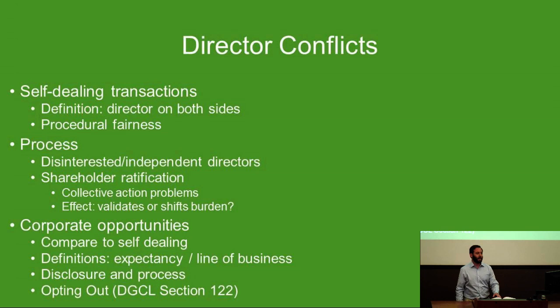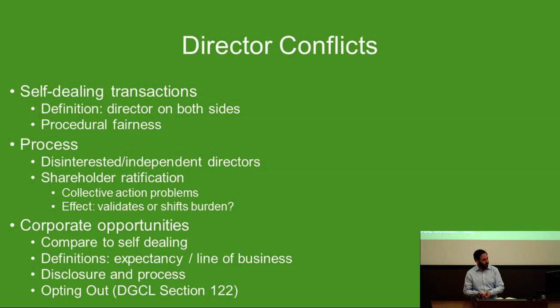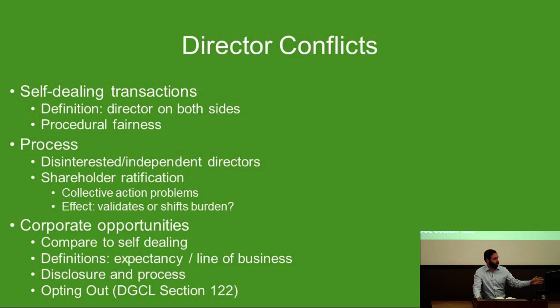Next, we have director conflicts — the duty of loyalty. This is where we really get to see some action where shareholders begin to win. We're going to talk about self-dealing transactions — directors on both sides: on the board of a particular company doing a transaction with another company that they are a shareholder in or director in. There's a process for once we've identified what these DCITs (Director Conflict of Interest Transactions) look like, we can cleanse them — one of the major roles of corporate attorneys is identifying these transactions and cleansing them so they don't result in liability.